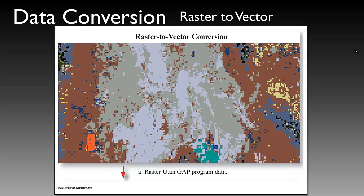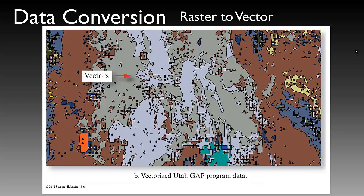Likewise, you can take raster data and convert it to vector data. However, this is where the discussion of raster cell size really comes into play. You want to make sure that if you are converting data from raster to vector, you are doing so using the proper cell size, and creating a spatial data set from a gridded data source that will suit your needs. Converting raster to vector, taking the raster data from the Utah vegetation gap program and converting that into a vector format, you can see that we have many individual pixels now identified as very small polygons with very jagged edges. This may or may not suit the needs of your vector data set requirements.